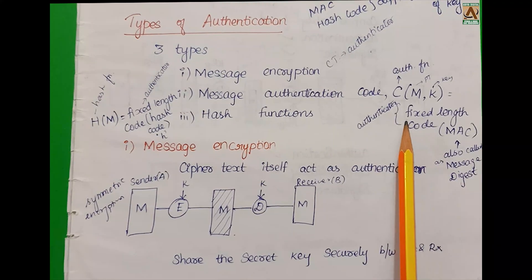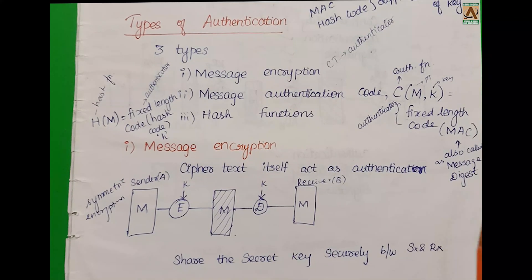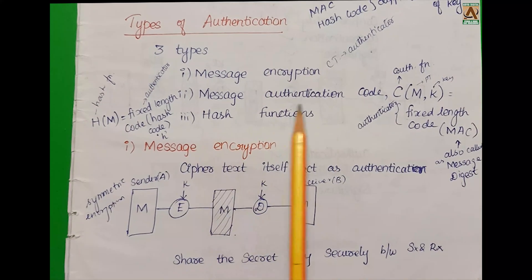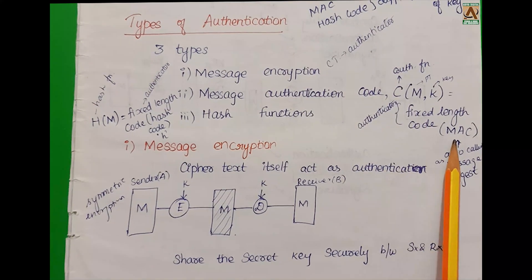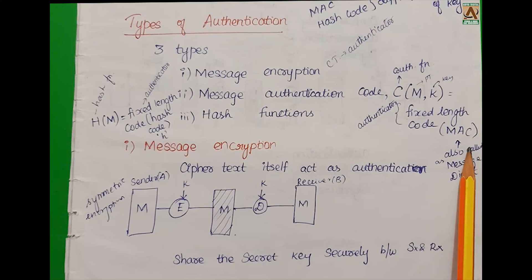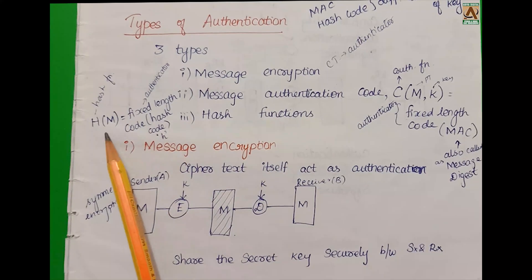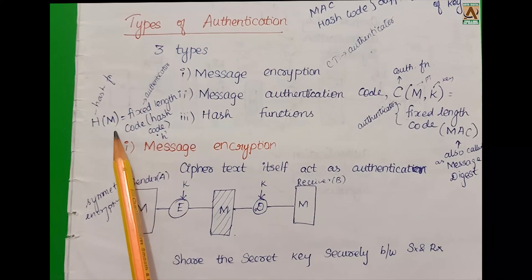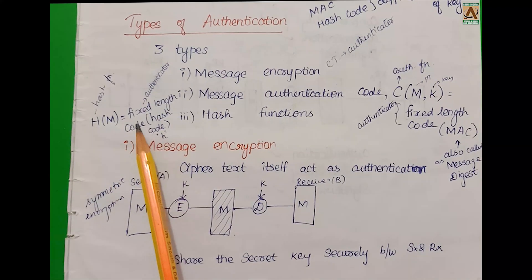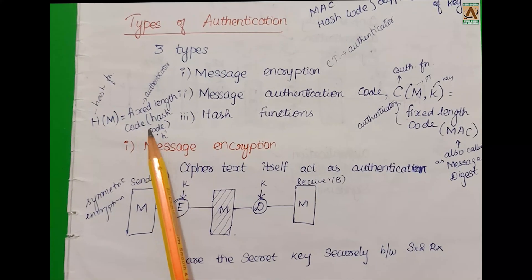The authenticator for MAC is called a Fixed Length Code, also known as Message Digest. Message Authentication Code produces a Fixed Length Code as the authenticator. For Hash Functions, H(M) means H is the Hash Function and M is the Message, and the result is the authenticator — a Fixed Length Hash Code used for authentication verification.